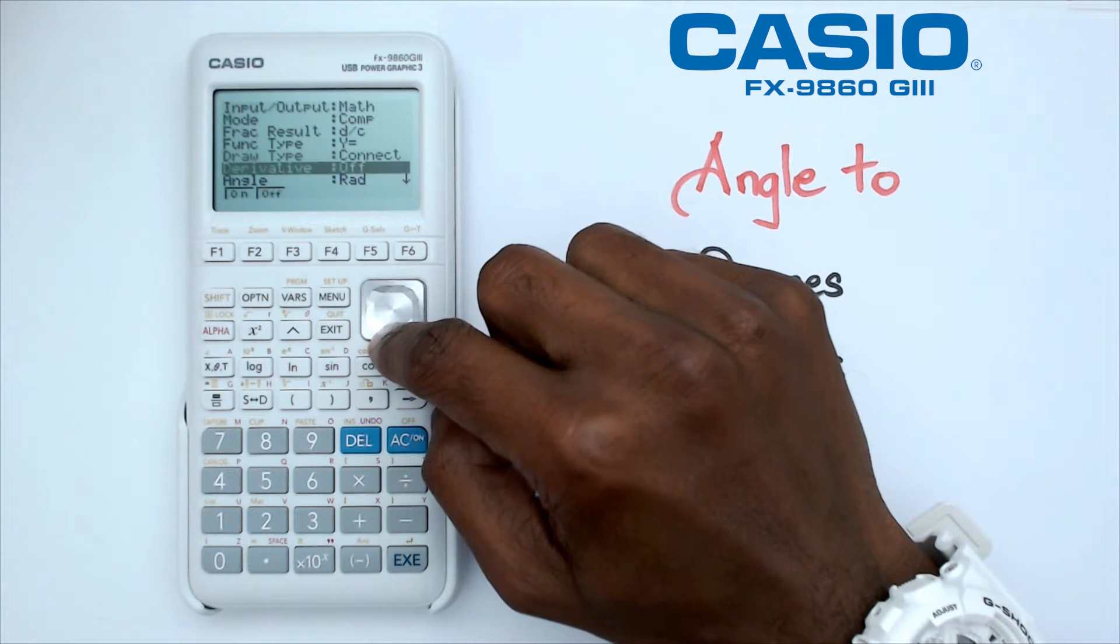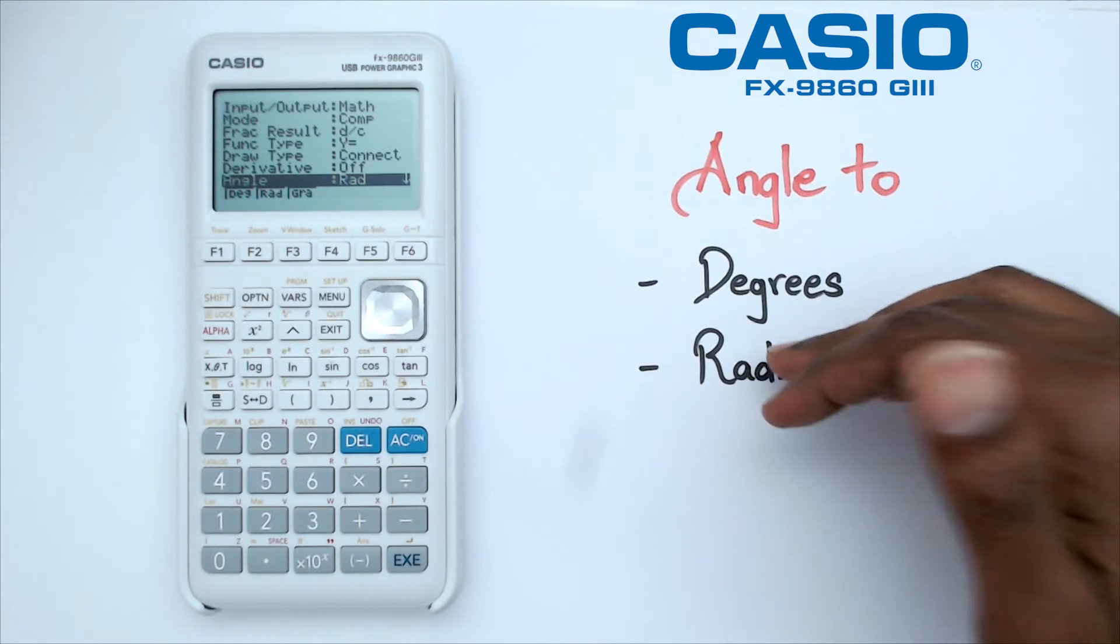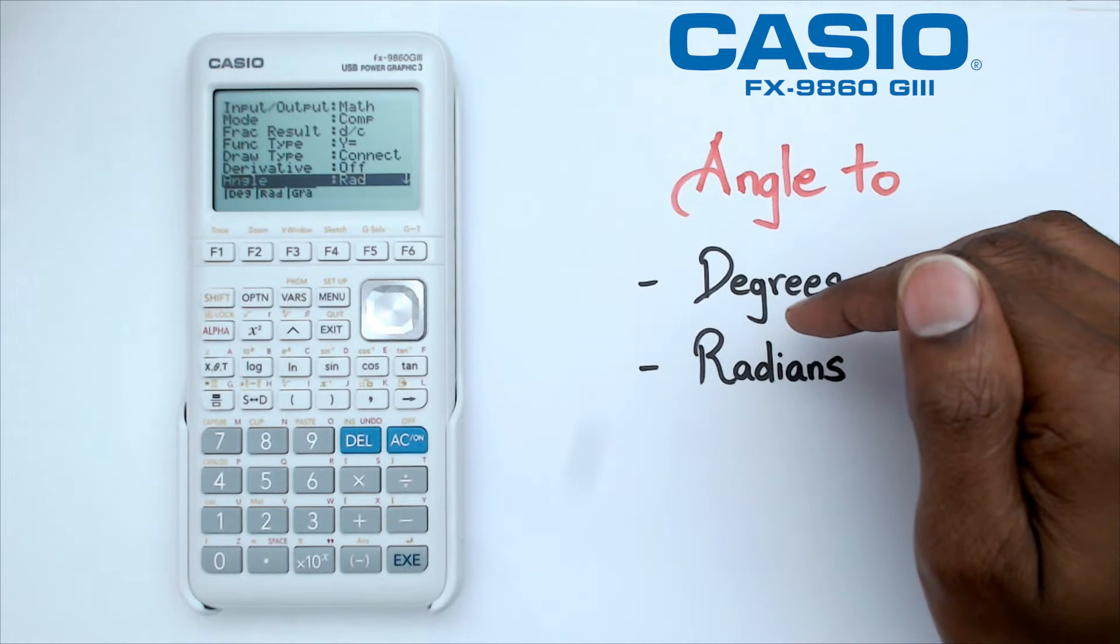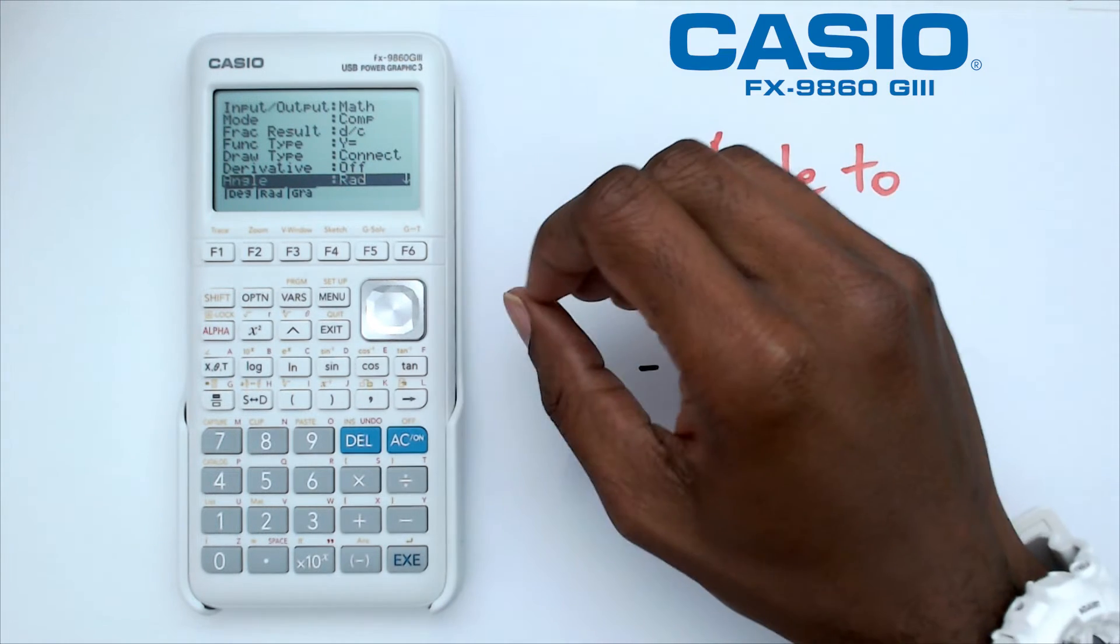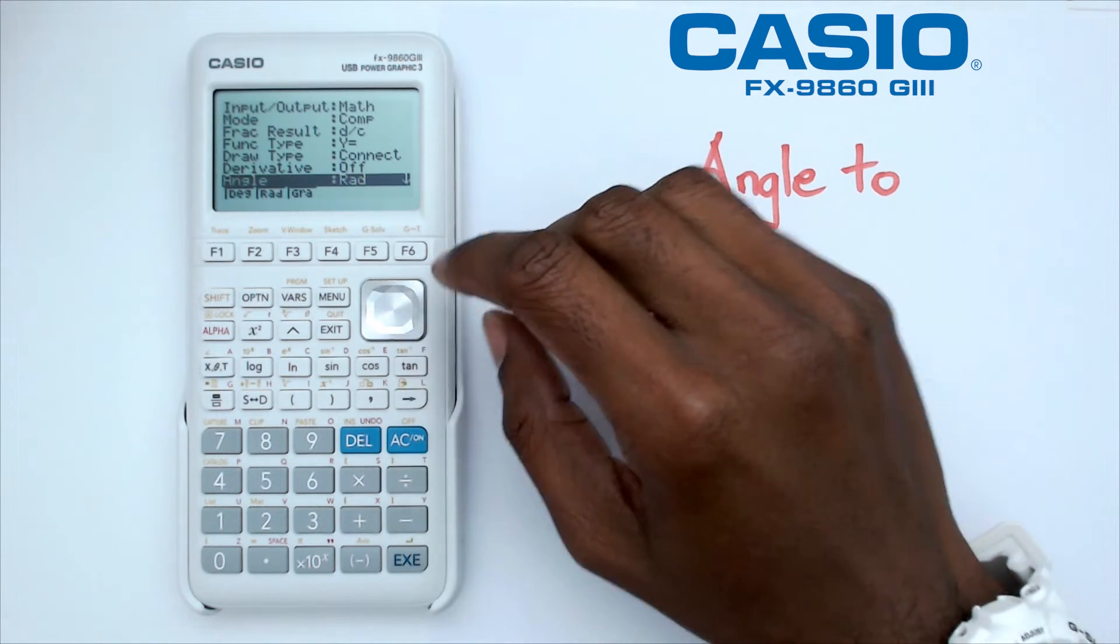Once you do that, then you got to go down to angle. Now when you reset your calculator, your calculator is always going to be in radians mode. So you need to change your calculator angle mode back to degrees if you are working with trigonometry, degrees, especially working with SOHCAHTOA and calculating angles and so on.